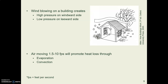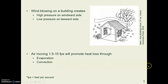When wind blows on the side of a building, the side that the wind hits is called the windward side, and pressure builds up there. On the other side, called the leeward side, there's less air pressure. So when wind blows against a building with open windows, high pressure on one side and low pressure on the other makes air flow through the building. That moving air removes heat through convection and also provides cooling through evaporation.